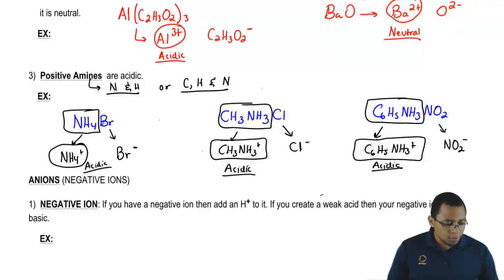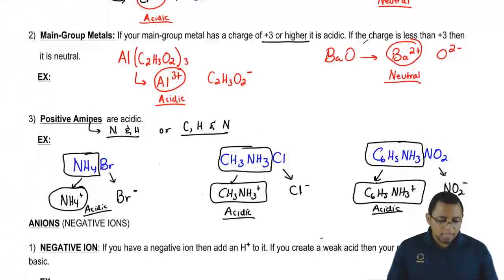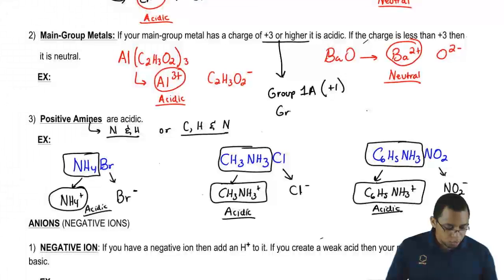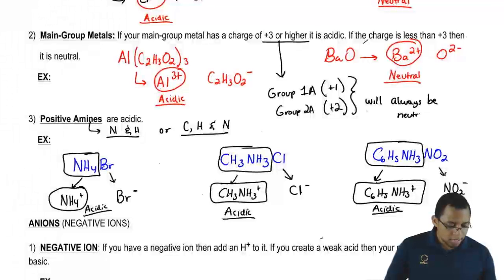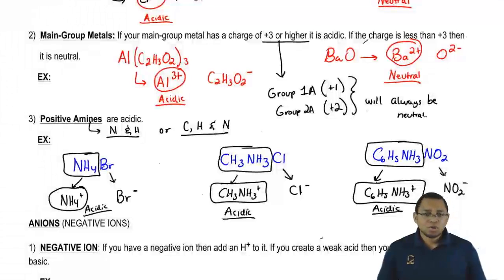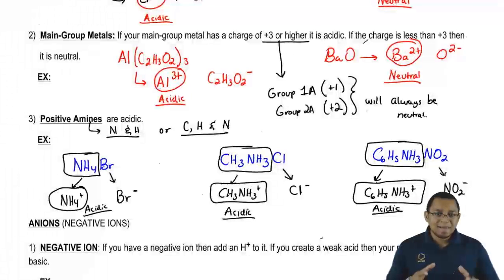And for the main group metals, if you really think about it, since the main group metals have to be plus 3 or higher, that automatically means that group 1A, which are always plus 1, and group 2A, which are always plus 2, will always be neutral. So they're not going to meet the requirement. So if you see a salt question on your exam and it has a group 1A or 2A metal involved, automatically that metal is going to be neutral because it's not going to meet the minimum requirement.